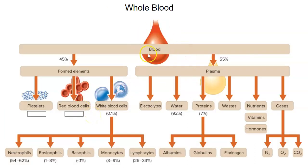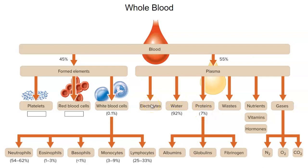In review: whole blood centrifuged splits into formed elements (45% — the hematocrit, mostly red blood cells) and plasma (55%). Formed elements include platelets, red blood cells, and white blood cells. The five white blood cell types are the granulocytes — neutrophil, eosinophil, basophil (ending in '-phil') — and the agranulocytes — monocyte and lymphocyte (ending in '-cyte'). Plasma is mostly water and protein, plus electrolytes like sodium, potassium, and calcium, waste products like urea, vitamins, hormones, and gases including oxygen, carbon dioxide, and nitrogen.